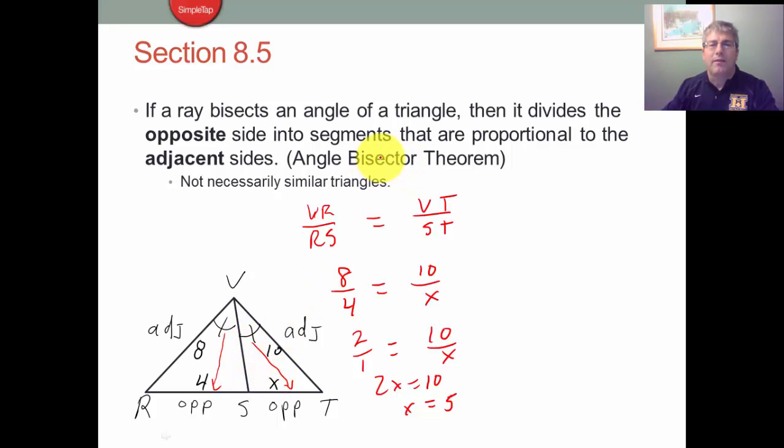So the Angle Bisector Theorem just says we bisect the angle, divides the opposite side in the same proportion as the adjacent side. So it divides those proportionally.